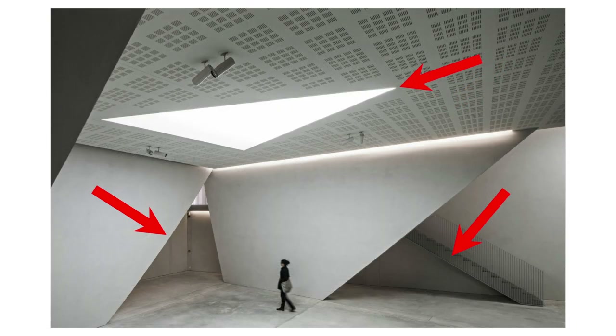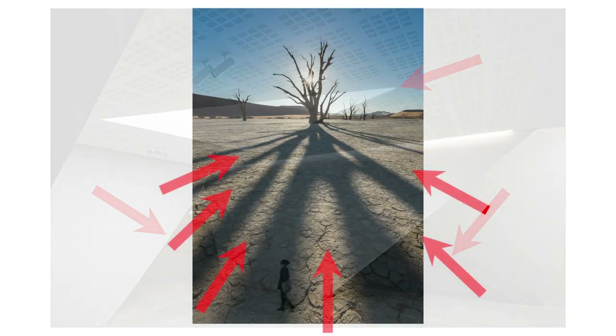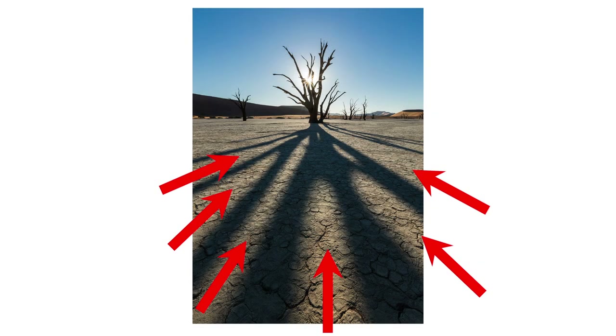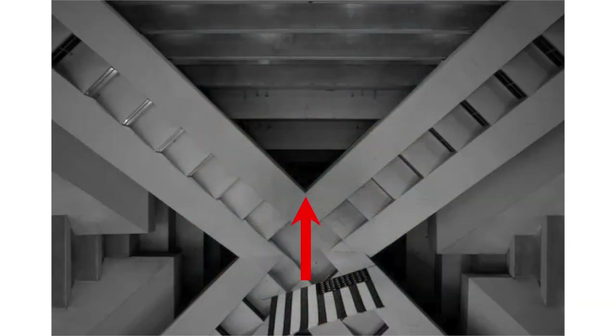When you start to change the rotation of the triangle and the angles inside of it, the photo begins to appear less stable, with the extreme having the apex at the bottom.